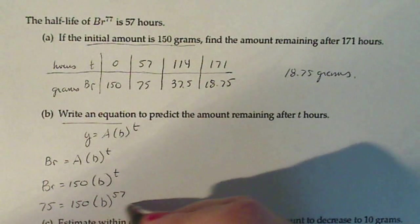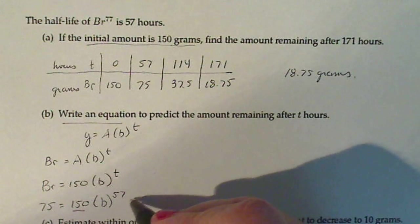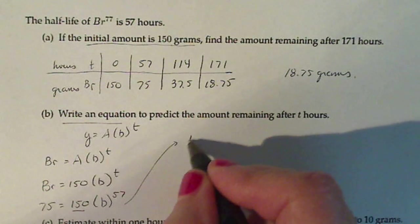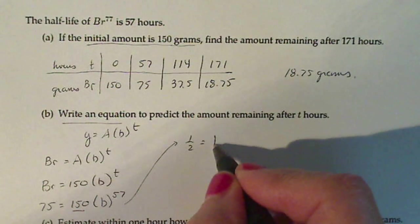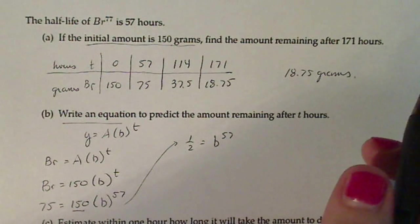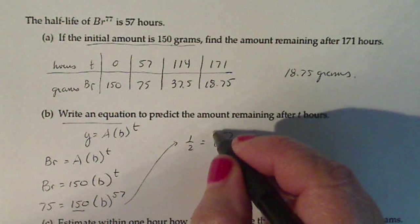Now I'm going to continue to solve for B. I'm going to divide both sides by 150. That leaves me with one-half equals B to the 57. Take the raise to both sides of the power of one over 57.